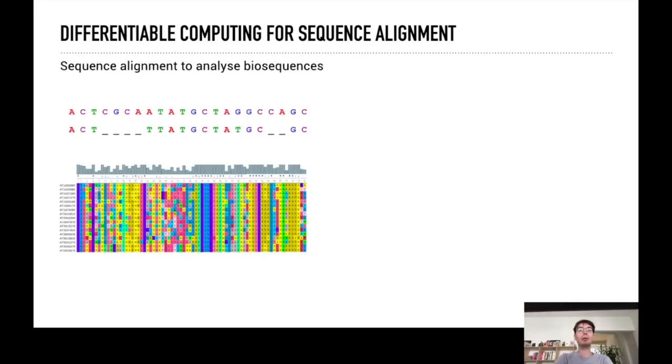The traditional workhorse in bioinformatics is sequence alignment which tries to identify conserved residues which tell you something about evolution and function, as you can see here.